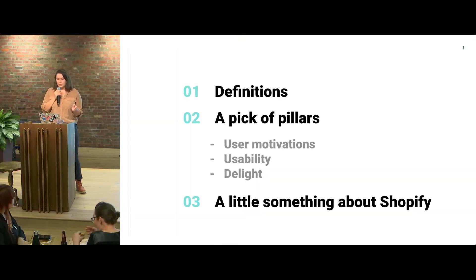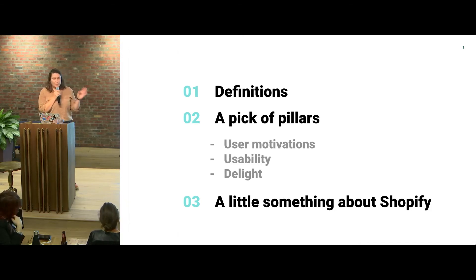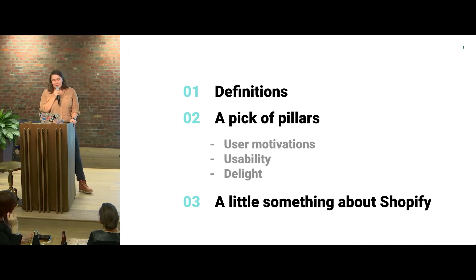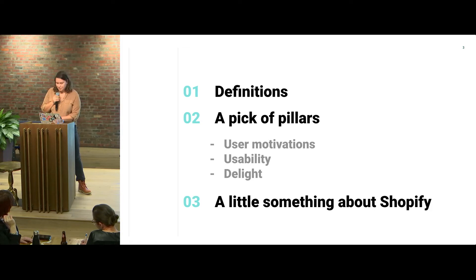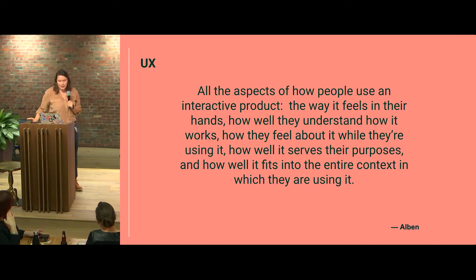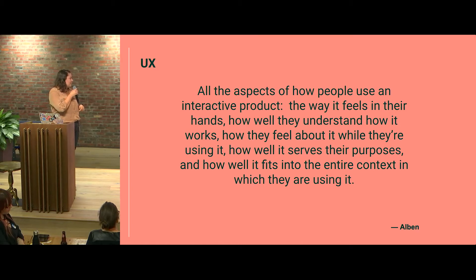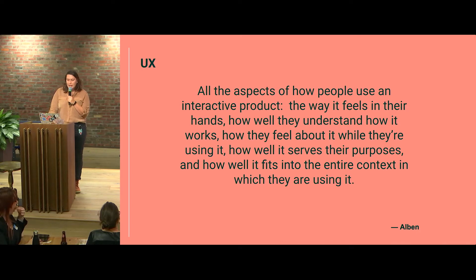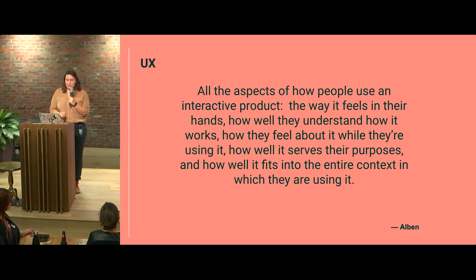We're going to take a high-level look at some of the fundamentals and themes of UX, and this is by no means an exhaustive list — we only have about 20 to 25 minutes. But these are some of the key pieces that define UX, and they are the things that kind of crop up in the day-to-day life of a UXer. Albin describes UX as all the aspects of how people use an interactive product: the way it feels in their hands, how well they understand how it works, how they feel about it while they're using it, how well it serves their purpose, and how well it fits into their entire context. This represents both the functional and the human-centered side of the practice.